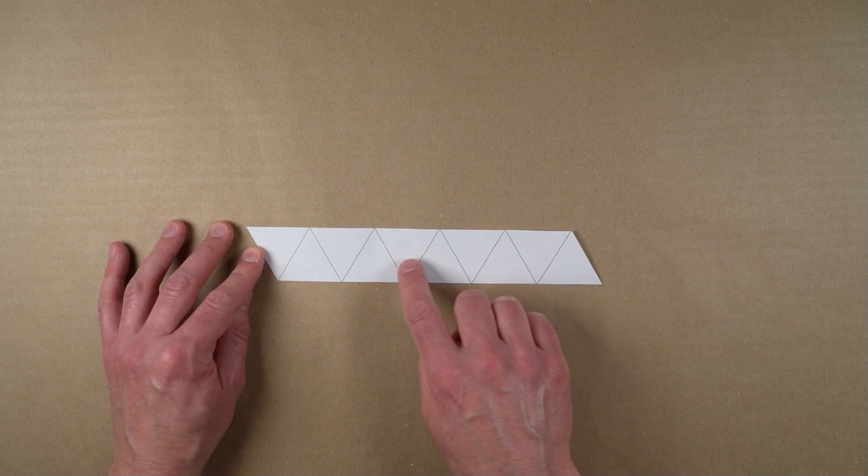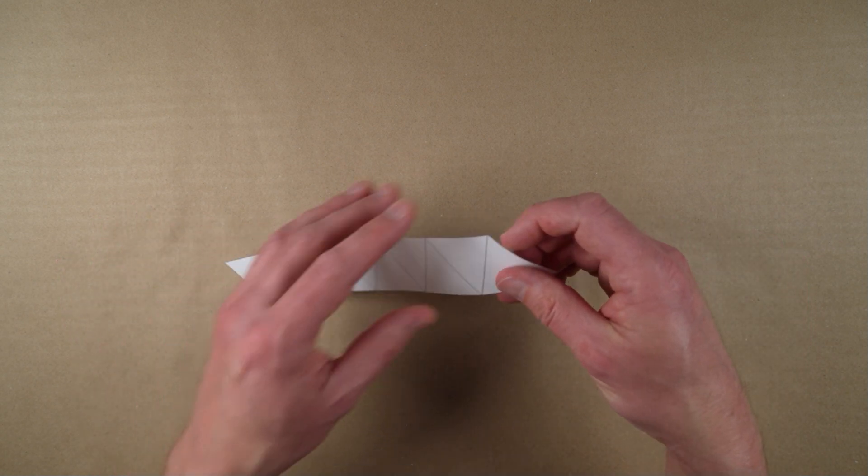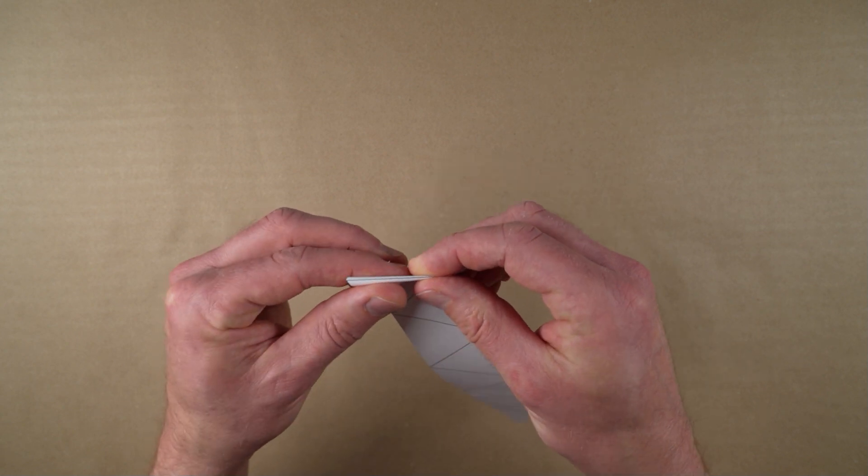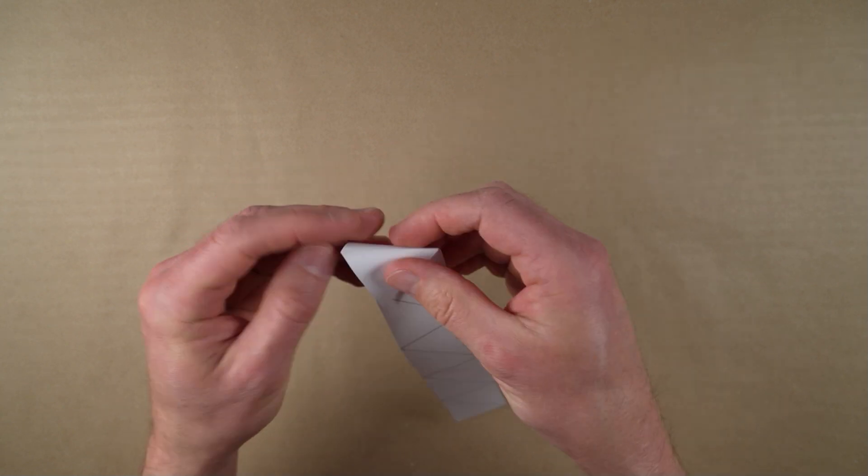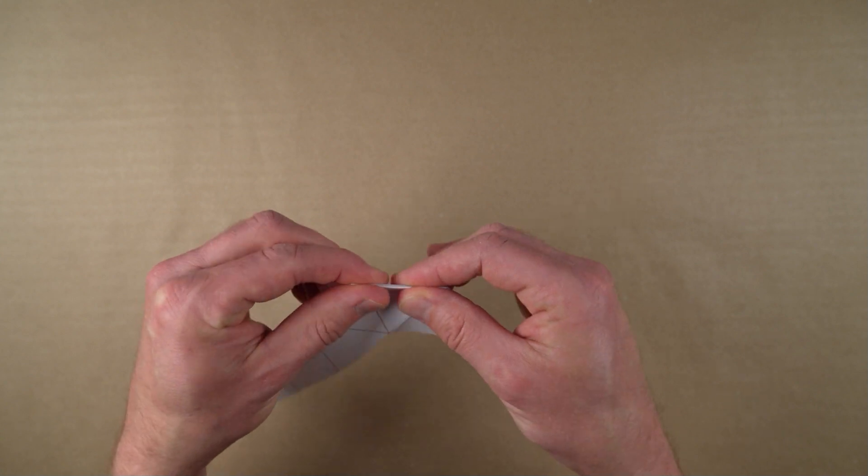Fold back and forth along the inside printed lines to create a crease along each triangle's edge. This will make it easier to build and use the hexaflexagon.